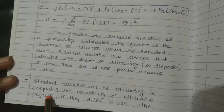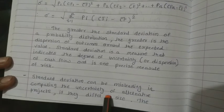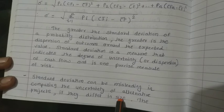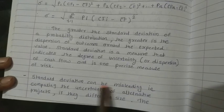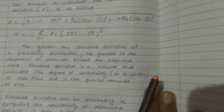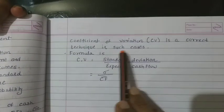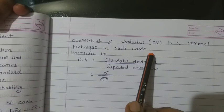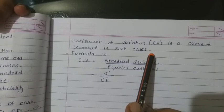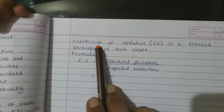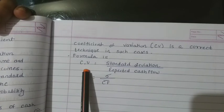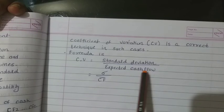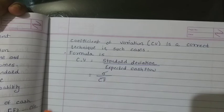Standard deviation can be misleading when comparing the uncertainty of alternative projects if they differ in size. In such cases, the coefficient of variation is the correct technique. The formula for coefficient of variation is: Standard Deviation divided by Expected Cash Flow (CF-bar). So when comparing two projects of different sizes, standard deviation may provide a misleading picture, and coefficient of variation gives the correct decision.